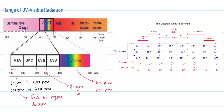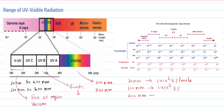In the visible region, we find different colors from violet up to red, each having a different wavelength and different energy. Comparing wavelength and energy: at 10 nanometers wavelength, the energy is 1×10⁴ kilojoules per mole; at 100 nanometers, the energy is 1×10³ kilojoules per mole; and at 400 nanometers, the energy is 2.49×10² kilojoules per mole.